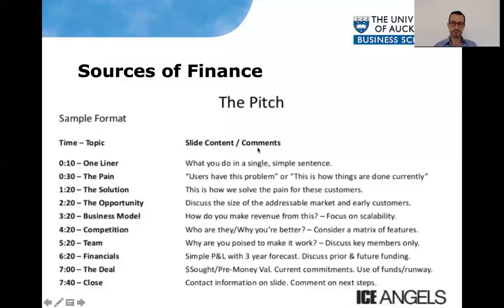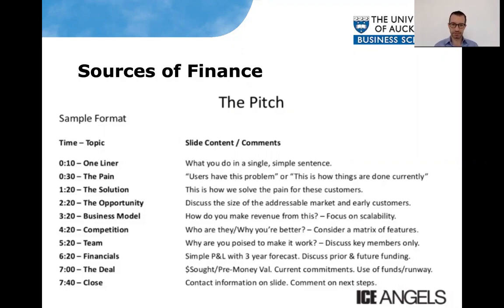Let's start with an example. This is a list of things that the Ice Angels — a very famous business angels group in Auckland, New Zealand — suggest founders to cover in their presentation. As you can see, it's approximately a seven to eight minutes presentation, but it can last usually between 10 and 15 minutes. You don't want it to be too long, otherwise your investors will be bored. It shouldn't take too much time to convey your message, the quality of your company, and to convince your investors.